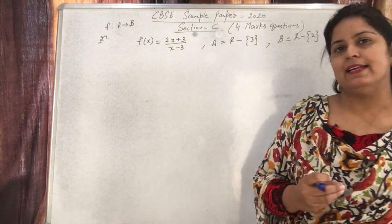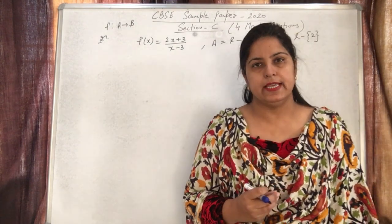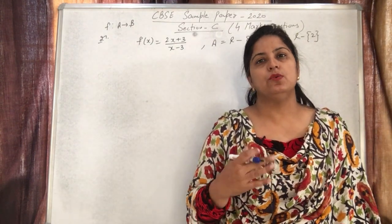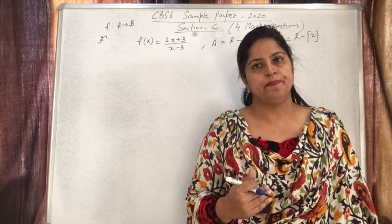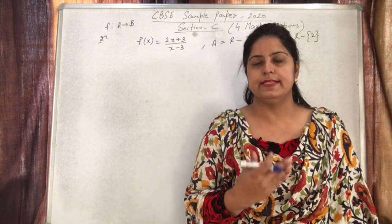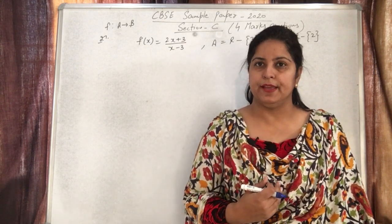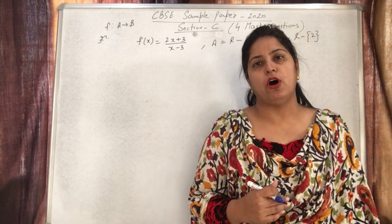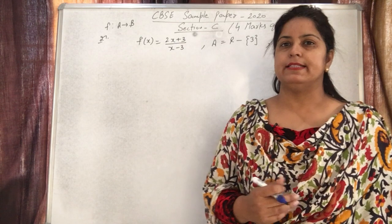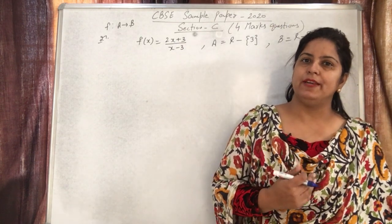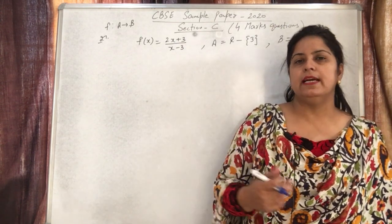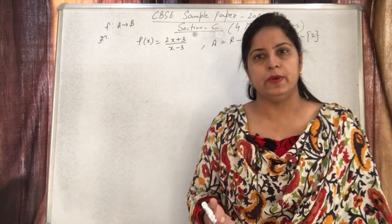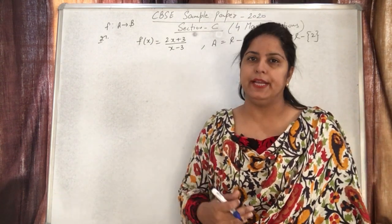For invertibility, we can show the function is invertible in two ways: either show it is 1-1 and onto (bijective), so the inverse exists; or use the composite function method where fog(y) and gof(x) equal the identity. But here we will use the first method because the question separately asks if the function is 1-1 and onto.